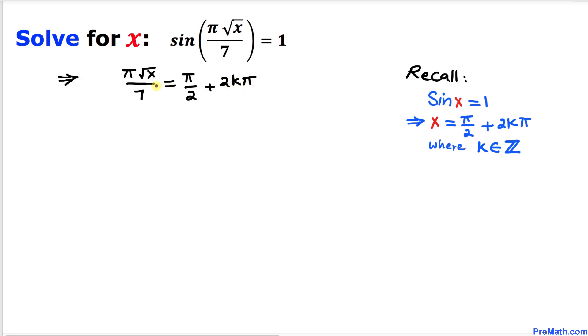Now we are going to solve for x. The first thing we'll do is multiply by the reciprocal, which is 7 over pi, on both sides. We can see this 7 and pi cancel out on the left side.